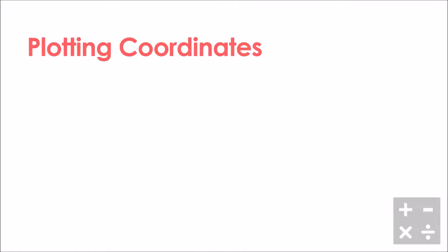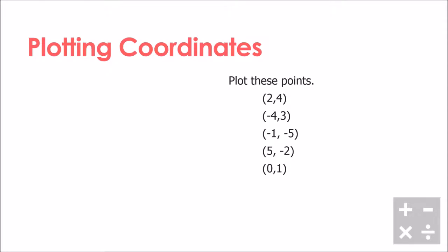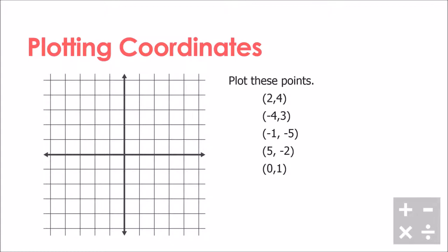Now we can work a little bit backwards and plot coordinates, which means putting them onto the graph. I've got five coordinates to place on our Cartesian plane. Let's start with point A at two comma four. The positive two means I go two to the right of the origin, and the positive four means I go four up. So I go two in the x direction, then four up in the y direction — one, two, three, four — and that is where point A goes.